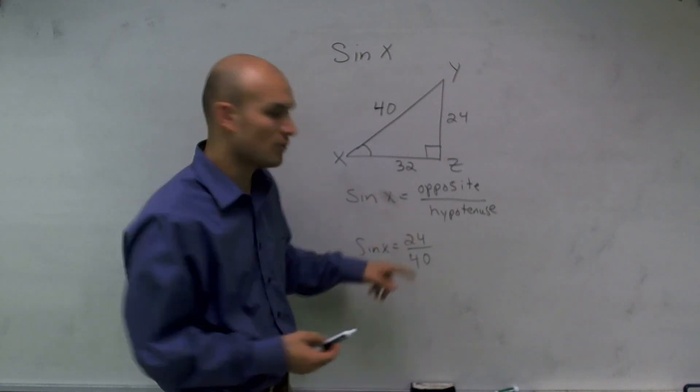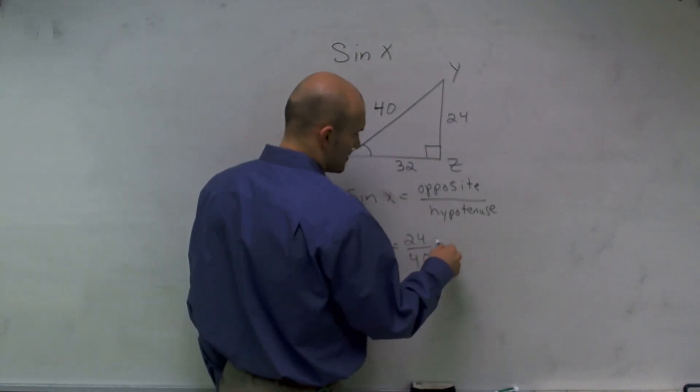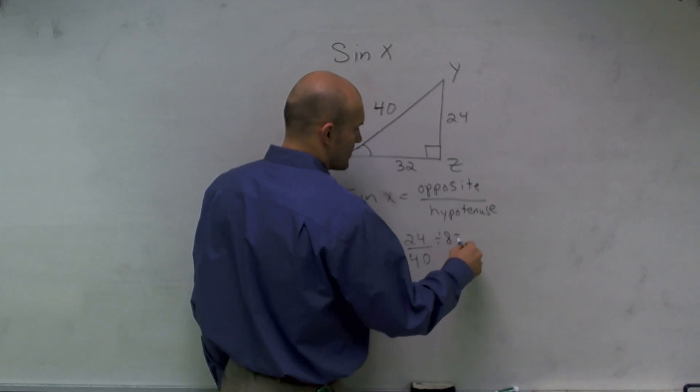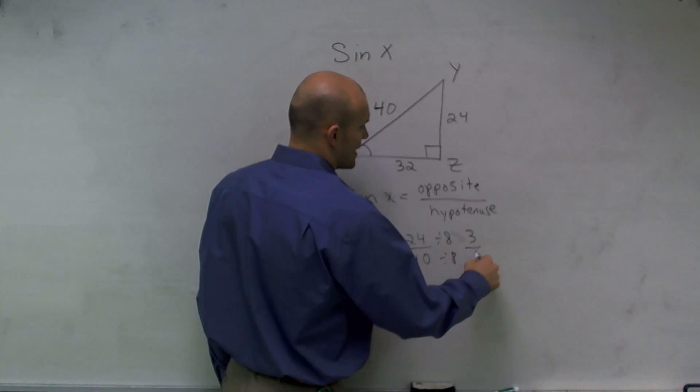So if I divide 24, let's actually just write it out for you, divide 24 by 8, I get 3. And divide 40 by 8, I get 5.